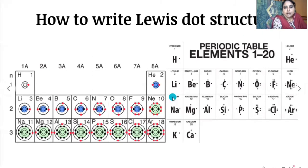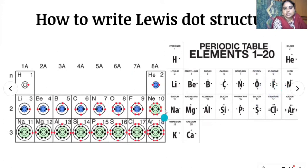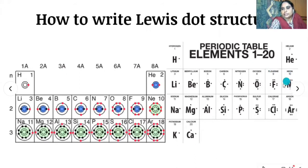Oxygen contains six electrons in its outermost shell, so write six dots on oxygen. Fluorine contains seven electrons in its outermost shell, so put seven dots on fluorine. Neon contains eight valence electrons, so write eight electrons around neon.